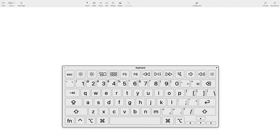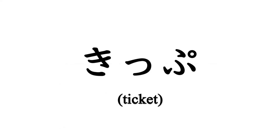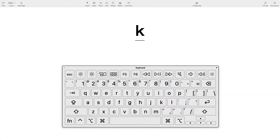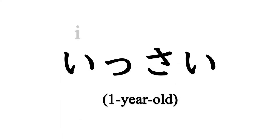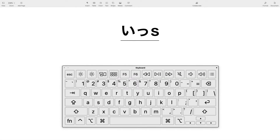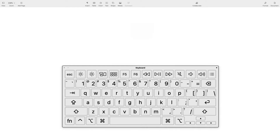Let me show you some other examples. KIPPU (切符) — in Romaji, it's spelled K-I-P-P-U, because the next kana to the small tsu is PU, and the first letter is P. So the small tsu in KIPPU is represented by doubling the P: K-I-P-P-U. How about this one? It's I-S-S-A-I (一切), so the small tsu is represented by the S. The same thing goes for other small characters.